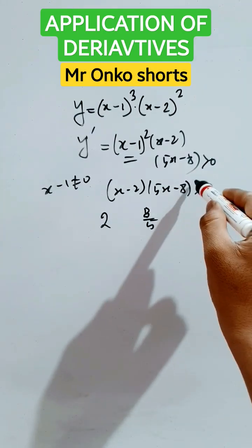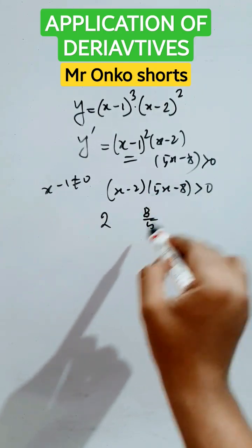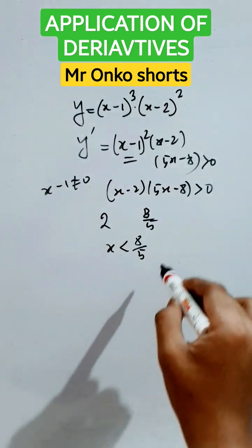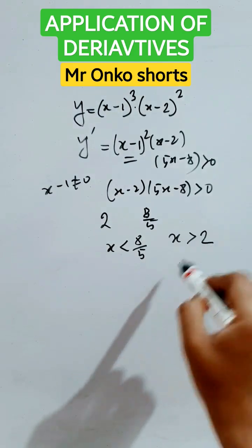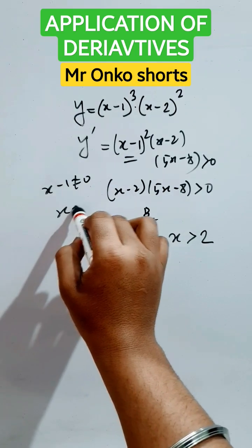Here, 8/5 is smaller. We know that the open mouth is towards this variable. So x must be less than 8/5 and x must be greater than 2, and x not equals 1.